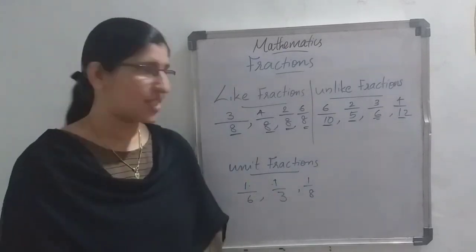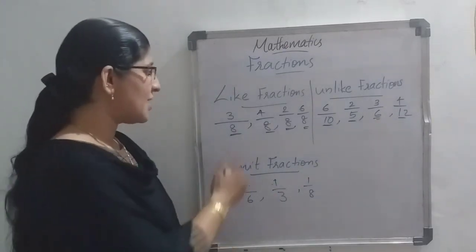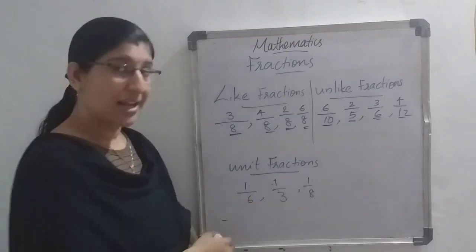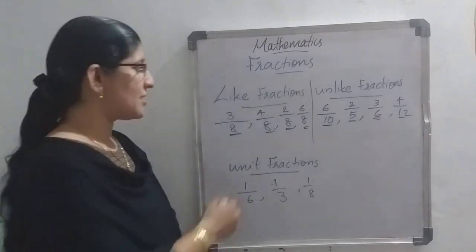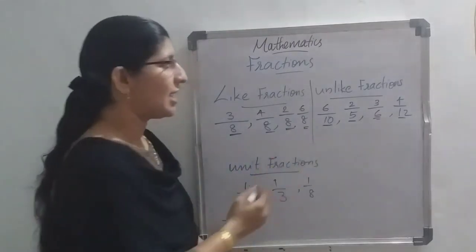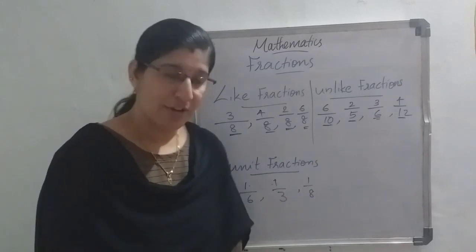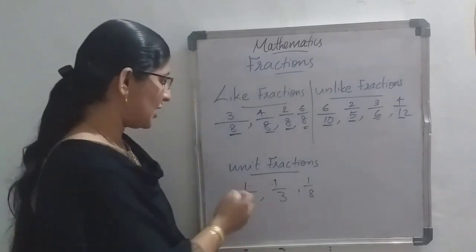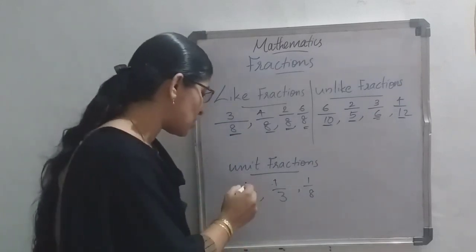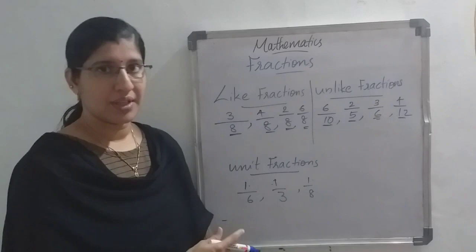These are the three types of fractions. Like fractions means the denominators are the same; unlike fractions means the denominators are different; and unit fraction means the numerator is always 1.